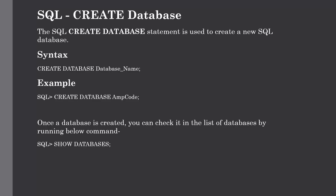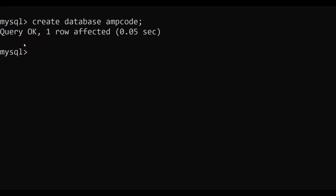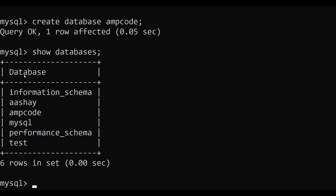Once the database is created, we can check the list of databases by running the SHOW DATABASES command. After executing it, you can see the list of all databases, including the 'amcode' database we just created. This is how you can create a database and validate it using SHOW DATABASES.